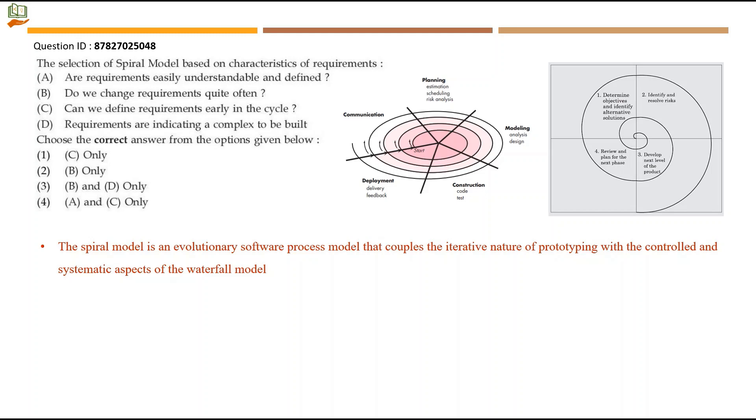The spiral model is an evolutionary software process that couples the iterative nature of prototyping with controlled and systematic aspects of waterfall model. Here we have four steps: determine objectives and identify alternate solution, identify and resolve risks, develop next level of product, review and plan for the next phase. This goes on in an iterative way. What requirements make us select that this project will need a spiral model?